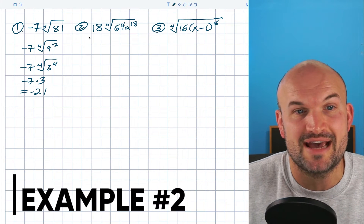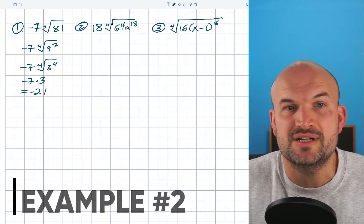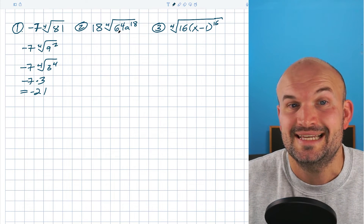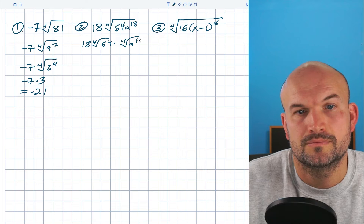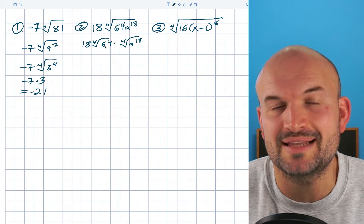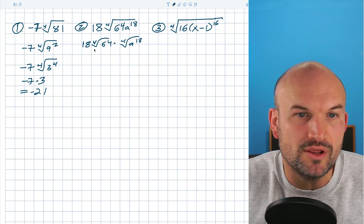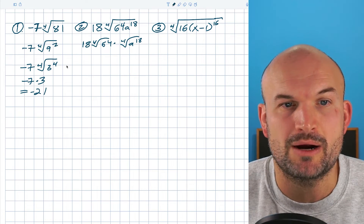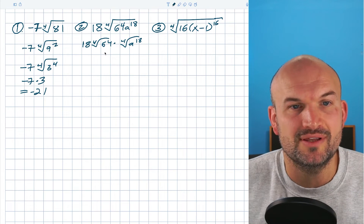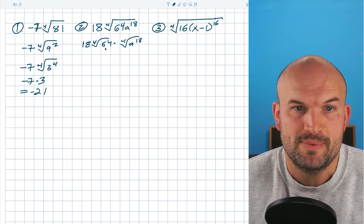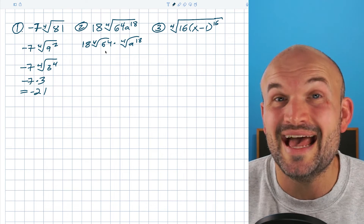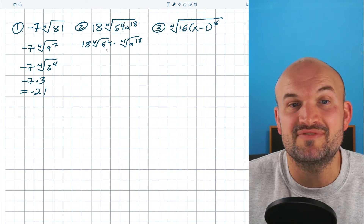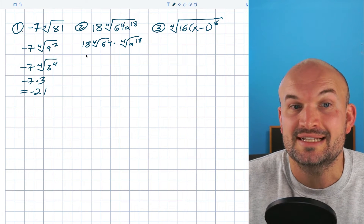For this next example, I have an 18 on the outside, and what I'm going to do is break up the fourth root of 64 and the fourth root of a to the 18th power. Remember, the 18 is just multiplying on the outside. Our goal with the number is to find something being raised to the fourth power. Three to the fourth power is 81, so two to the fourth power would be 16, which doesn't equal 64 — however, 16 does divide into 64, so I can go ahead and simplify that.